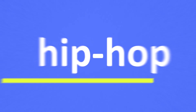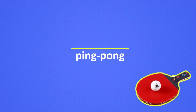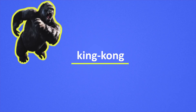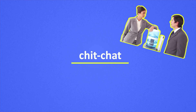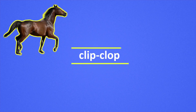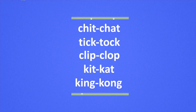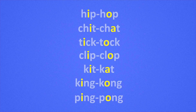If we take a look at similar words like ping pong, king kong, kit kat, chit chat, tick tock, clip clop, you'll notice a structure. The word with the I is always first, followed by the A or O.